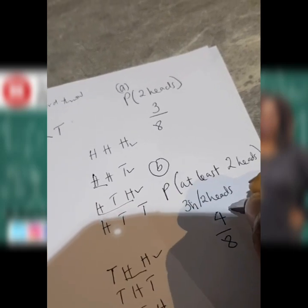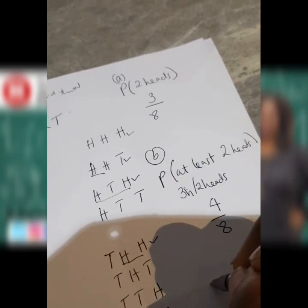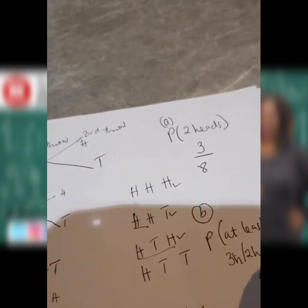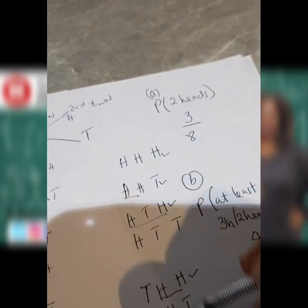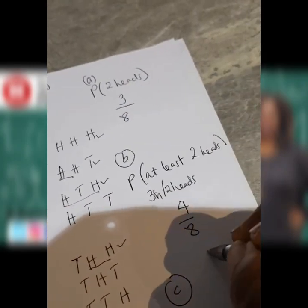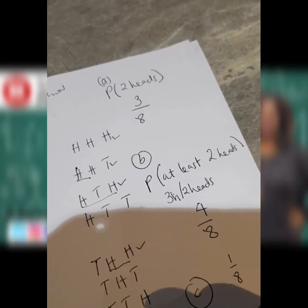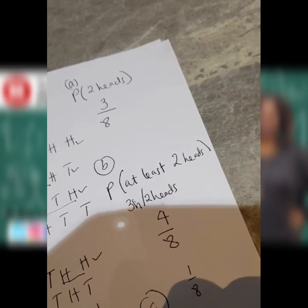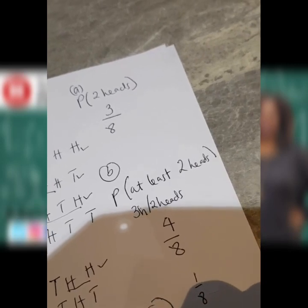You can reduce 4 over 8 to a half if you want. For C, which has already been done, it says three heads — the probability of getting three heads is just one out of the eight combinations. For D, the probability of getting at most two heads.